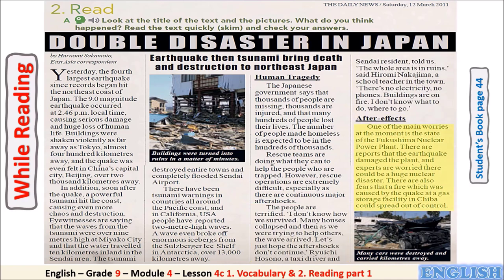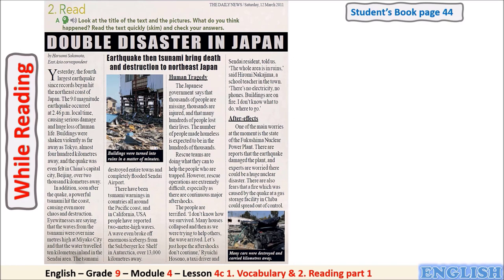'After Effects: One of the main worries at the moment is the state of the Fukushima nuclear power plant. There are reports that the earthquake damaged the plant and experts are worried there could be a huge nuclear disaster. There are also fears that a fire, caused by the quake at a gas storage facility in Jiba, could spread out of control.'